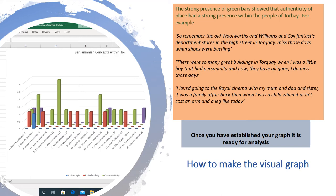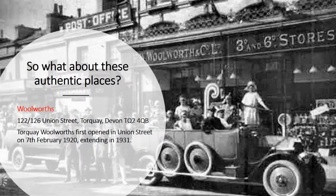Once you have established your graph, it is ready for analysis. The strong presence of green bars showed that authenticity of place had a strong presence within the people of Torbay. Examples include: 'Do you remember the old Woolworths and the Williams and Cocks fantastic department stores in the high street in Torquay? I do miss those days when shopping was bustling.' And: 'I loved going to the Royal Cinema with my mum and dad and sister — it was a family affair back then, when it didn't cost an arm and a leg like it does today.'